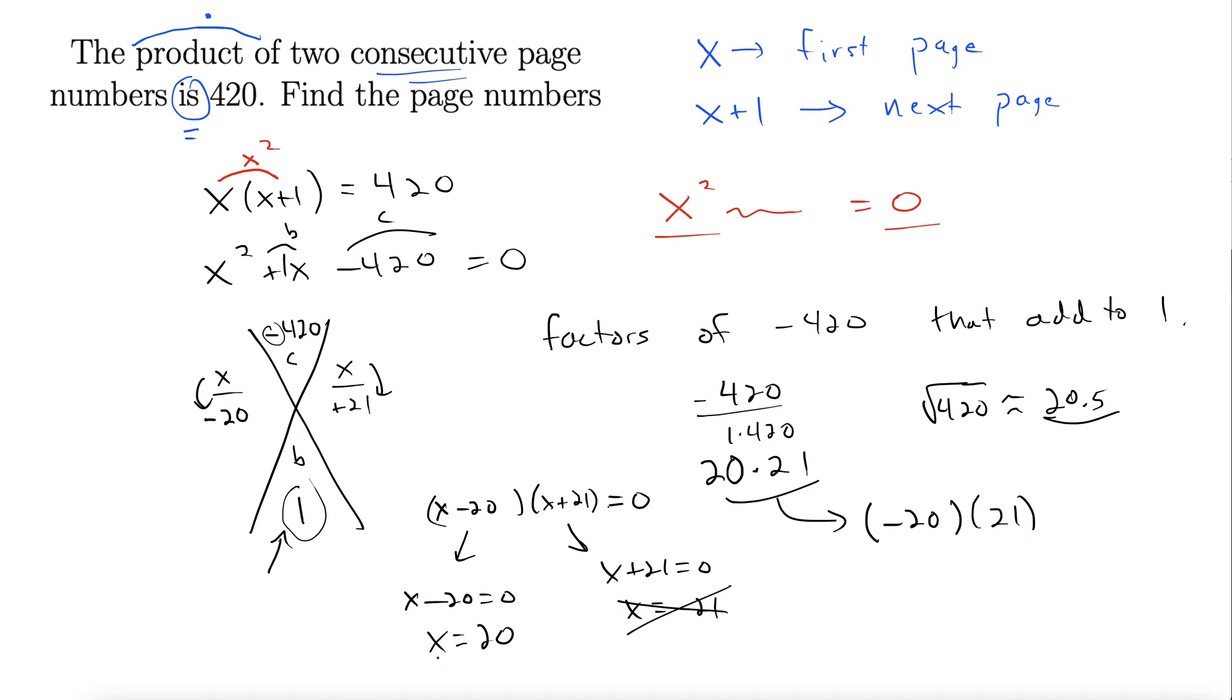So we're left with X equals 20. If we were to just circle this as our answer, it wouldn't be quite correct. Let's go back to the problem and see what it asks us for. Find the page numbers. So the page numbers are actually 20 and 21. So here's our answer. Because it asks for two consecutive page numbers. We found the first one, 20, and then X plus 1 is the next page, 21. There we go.